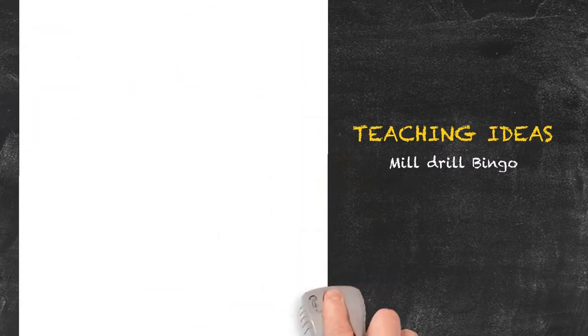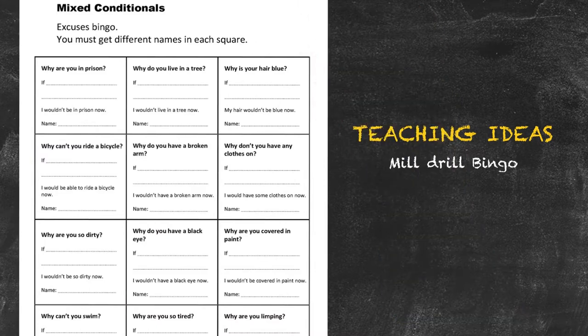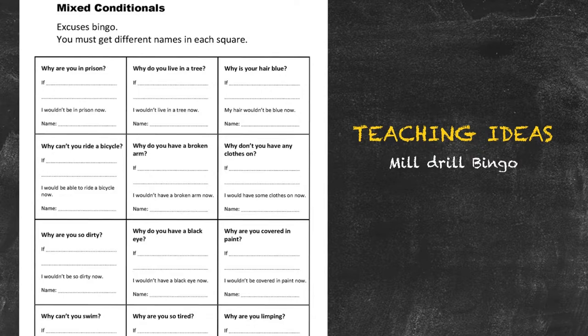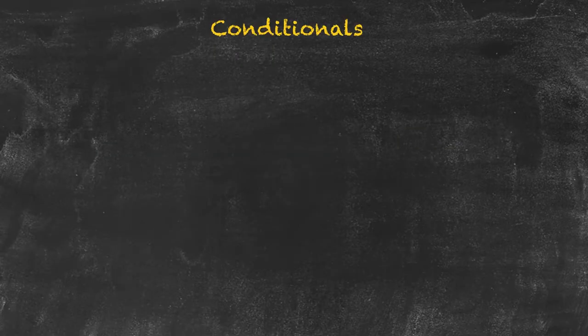Students each have a sheet like this. They mill drill around speaking to various people in the class and try to get different names in each one of the squares. In the middle of each square there is a situation such as 'Why are you in prison?' This particular person they've spoken to, Ron, who said 'If I hadn't stolen the car, I wouldn't be in prison now.' They're making up possible starts in the mixed conditional pattern, and if they can get a line of different names, then that's a bingo. Of course, you can play it so that the students try and get a full house to keep the activity going.